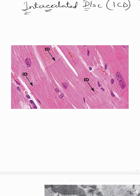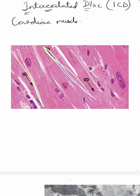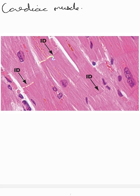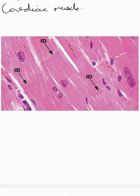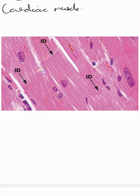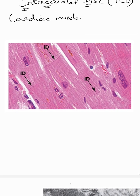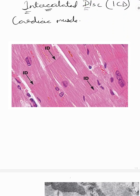Intercalated disc is a feature that you see in cardiac muscle. Here you are seeing a micrograph of cardiac muscle fibers — these are longitudinal muscle fibers running through, and the horizontally running structures are all intercalated discs. They run in a transverse direction relative to the muscle fiber. These are intercalated discs, a characteristic of cardiac muscle.